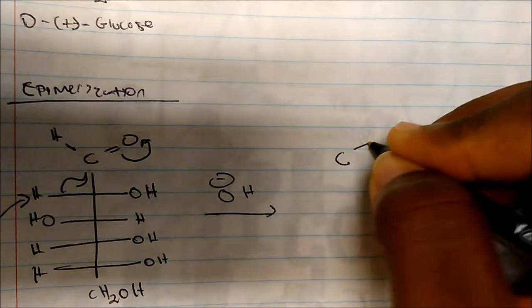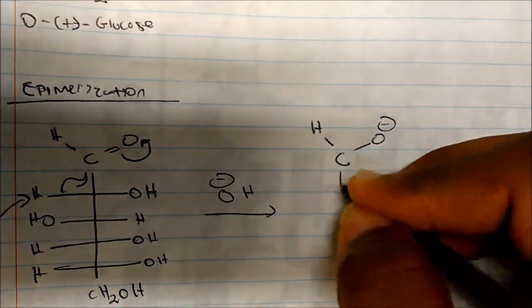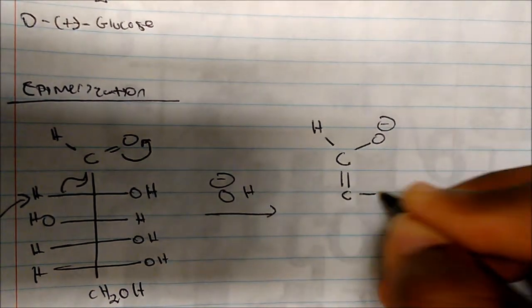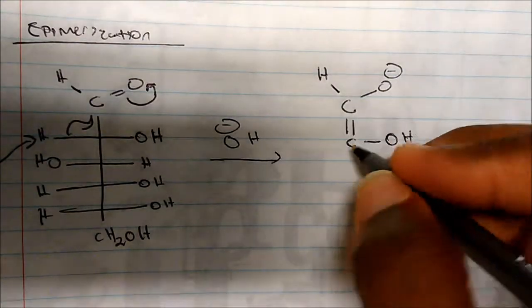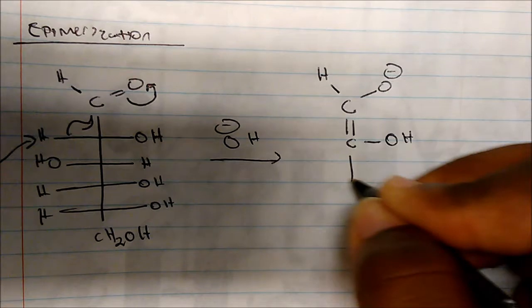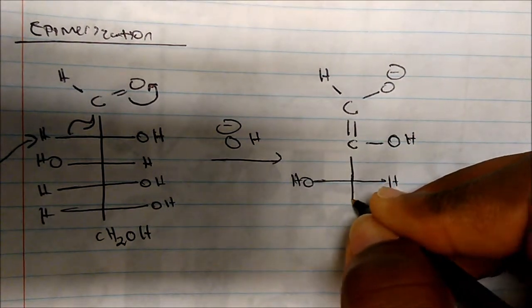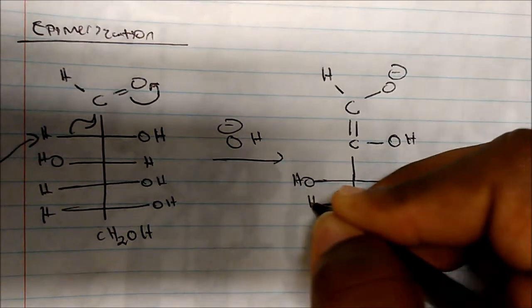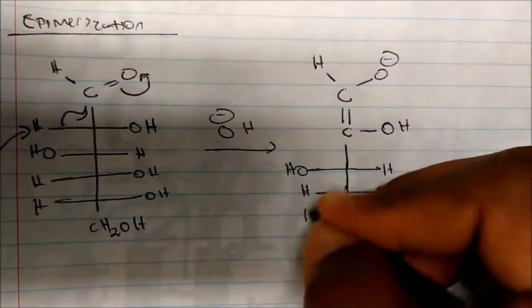That bond will come in and form a double bond, and one of those pi electrons will kick off onto the oxygen. So we get a structure with an O⁻ charge, still our hydrogen, a double-bonded carbon with the alcohol, and the rest of the chain.